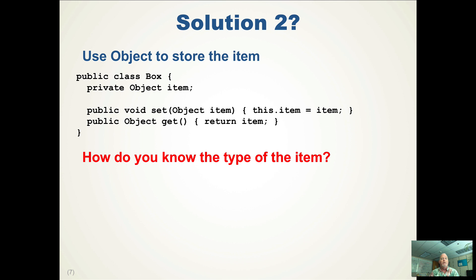One of the issues with it is how do you know the type of the item, because it is an Object. But if you put in an integer or a car or a student or something into the box, you probably want to get that student or car back out. So you have to know what you put in or say is it an instance of.